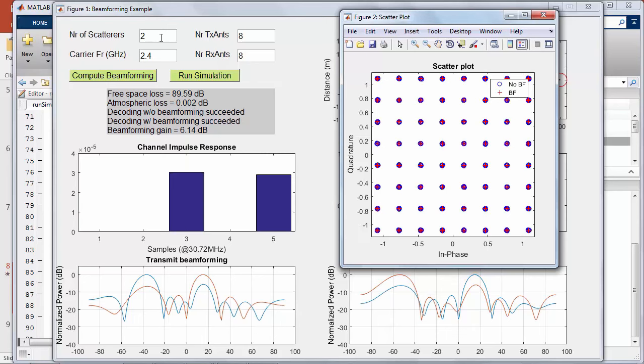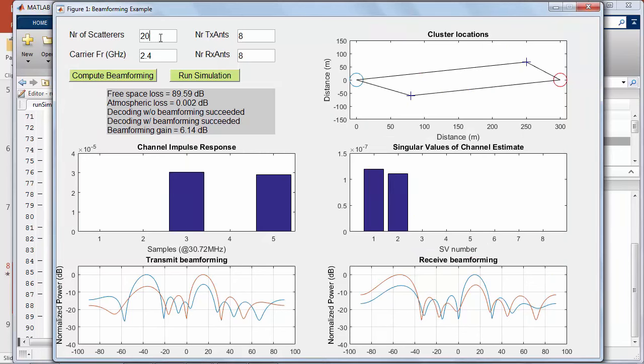Let's run the LTE simulation with and without beamforming. The scatter diagram in red shows that the received constellation of the beamforming case is less noisy than without beamforming. The beamforming gain measured on the EVM is about 6 dB.